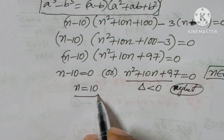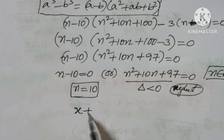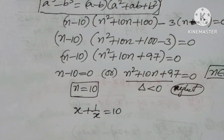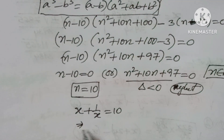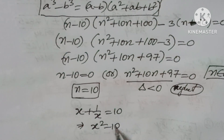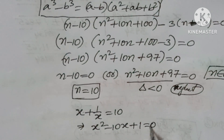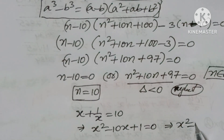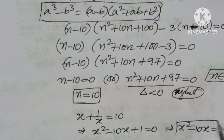Therefore n = 10, which means x + 1/x = 10. Writing this out: x² − 10x + 1 = 0, so x² − 10x = −1.